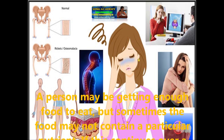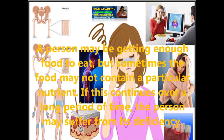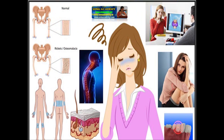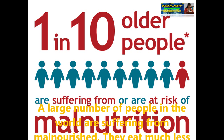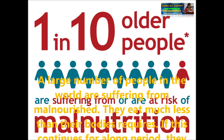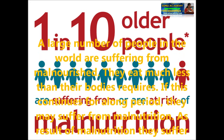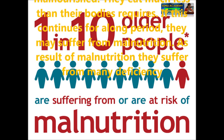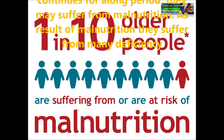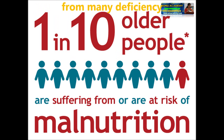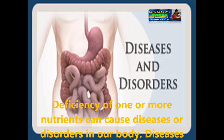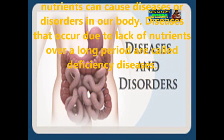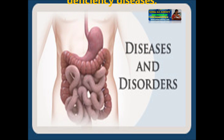A person may be getting enough food to eat, but sometimes the food may not contain a particular nutrient, and if this continues for a long period of time, the person may suffer from its deficiency. A large number of people in the world are suffering from malnutrition — they eat less nutrients than their body requires. Diseases that occur due to the lack of nutrients over a long period are called deficiency diseases.